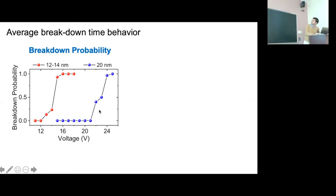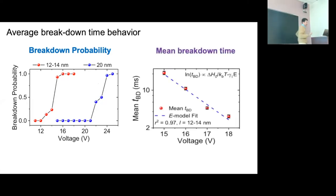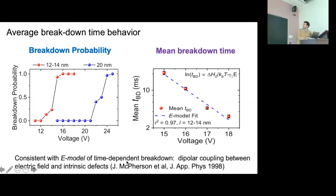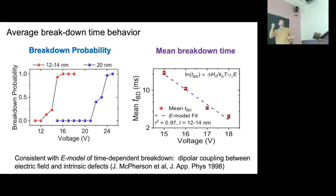We also looked at the mean breakdown time as a function of voltage. It fits nicely to a decaying exponential — on a semi-log plot it's a nice line — meaning the logarithm of breakdown time is proportional to the electric field. This is indicative of a physics known as the E-model of time-dependent breakdown. This arises from a dipolar coupling between the electric field and defects within the material: bonds slightly strained from equilibrium acquire a dipole moment when the field is applied, lowering the energy barrier so that a smaller thermal excitation is needed to break them.